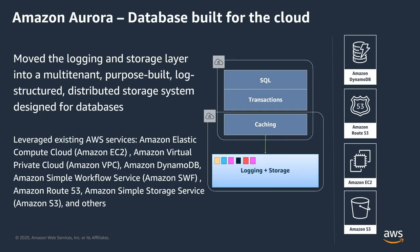Before we dive into the global database feature, let's talk about Amazon Aurora. Amazon Aurora is a database that we built for the cloud. What we mean by that is that Amazon Aurora can take advantage of the abundance of compute and storage natively available on the cloud. To take advantage of that, we decouple the compute and the storage subsystem of Amazon Aurora so that they can scale independently, and we built a multi-tenant log-structured distributed database storage system. We replicate the database across hundreds of storage nodes, which makes the storage highly scalable and efficient in terms of performance.